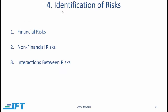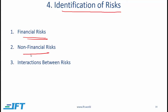Section 4 deals with the identification of risks. Here we will look at financial risks which originate from financial markets, non-financial risks which come from sources other than financial markets, and then the interactions between risks.